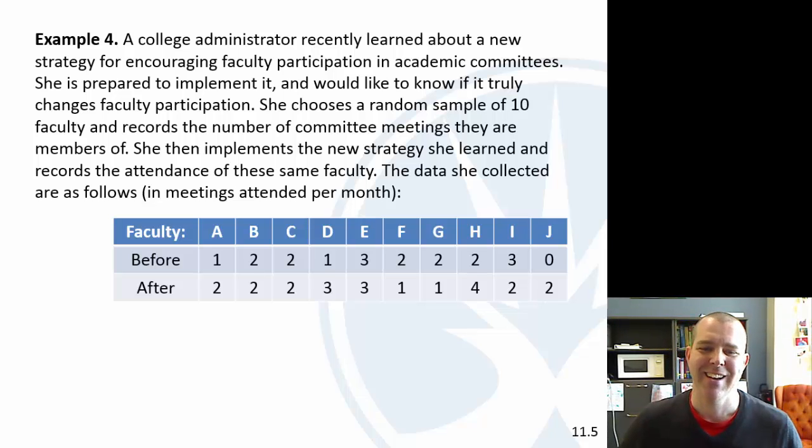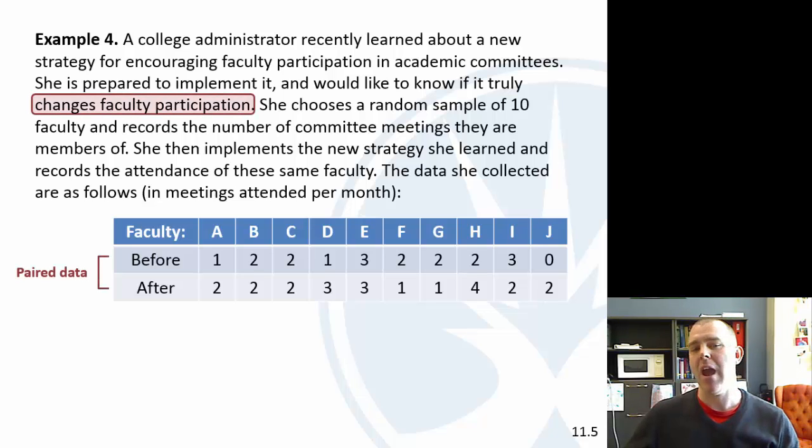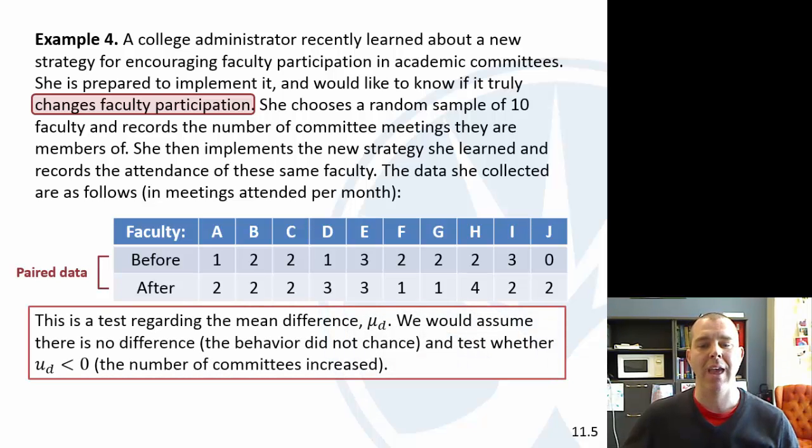Okay, so anyway, so we've got a before and after here. So we're wondering if it changes faculty participation, but we have paired data, right? But we have a before and after, so we would be looking at the mean difference. We'd assume there's no difference, and we'd be wondering if the mean difference is negative, so the number of committees increased or the number of meetings attended increased. So this would be looking at the mean difference.